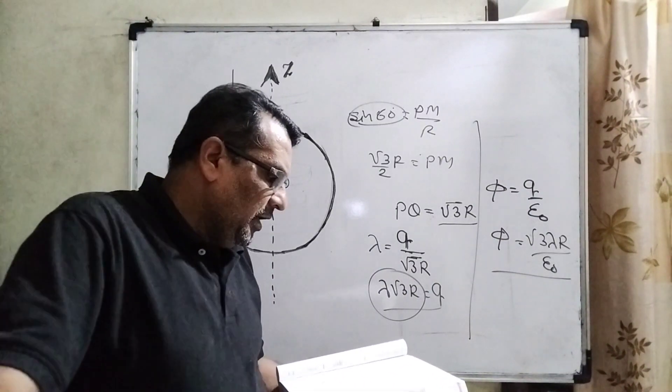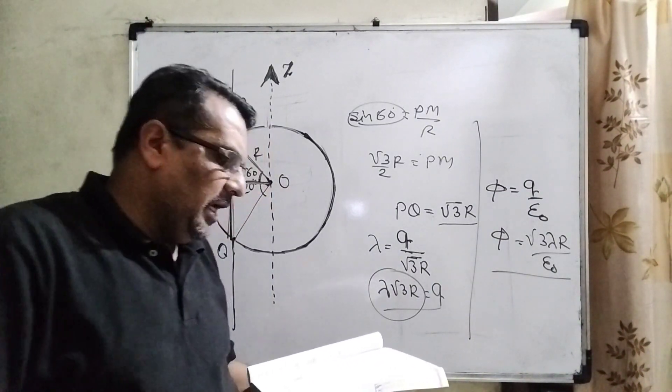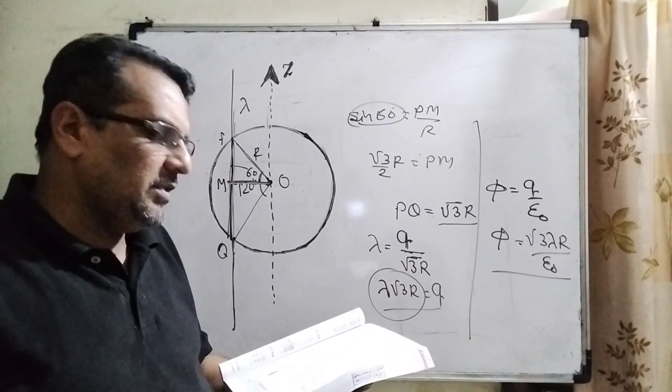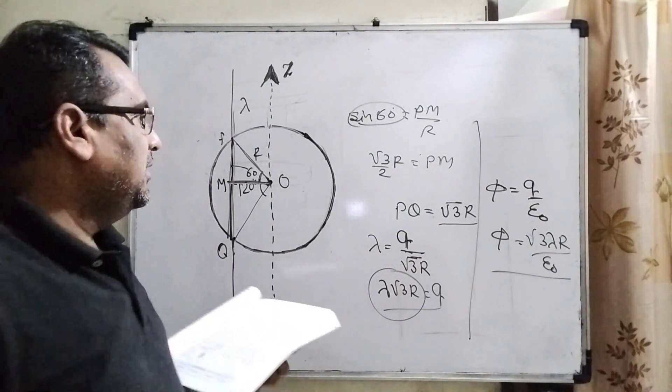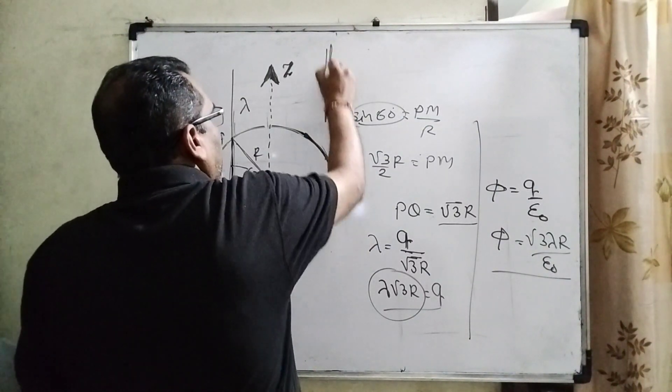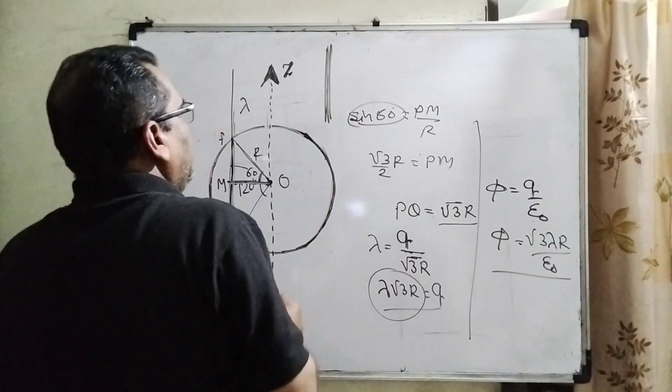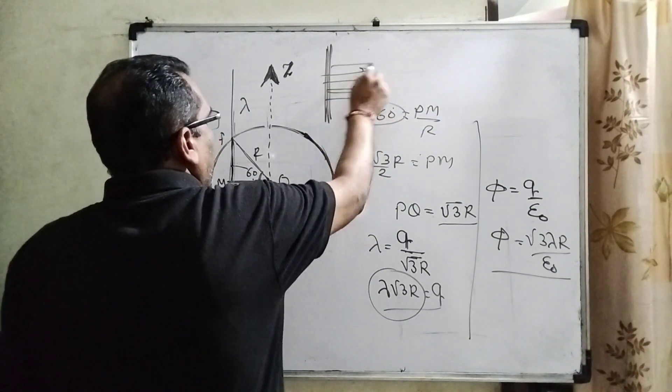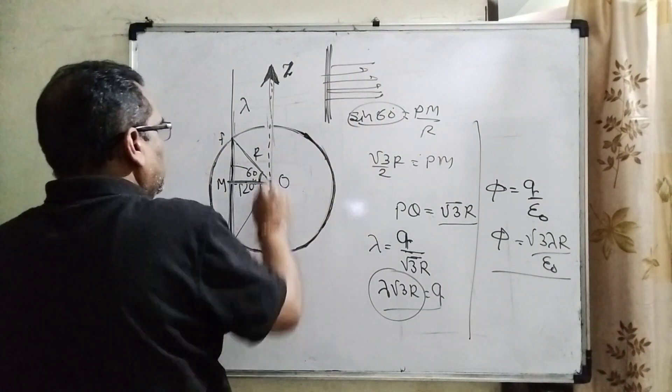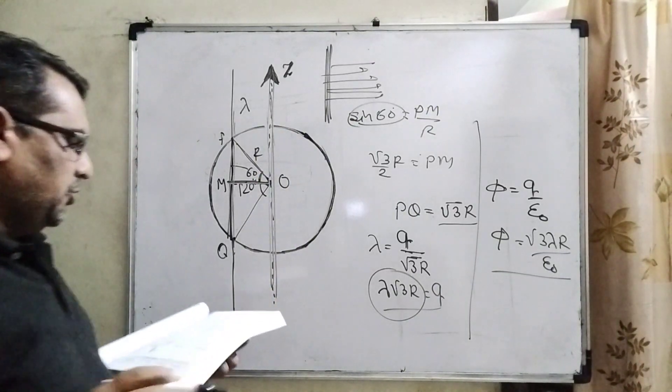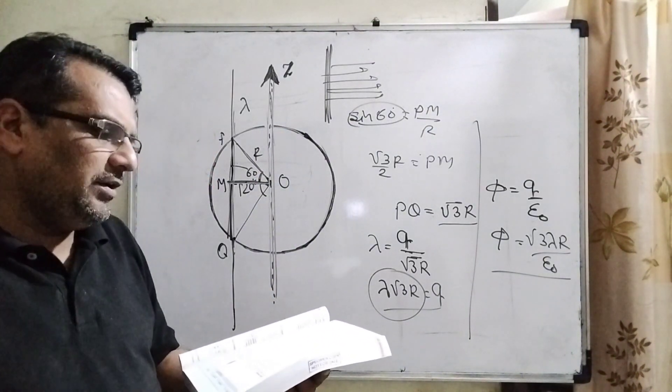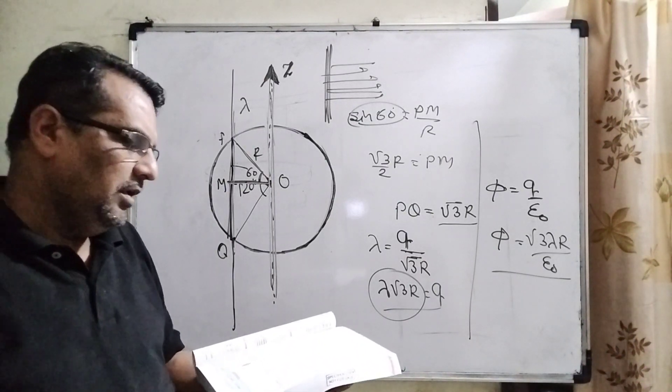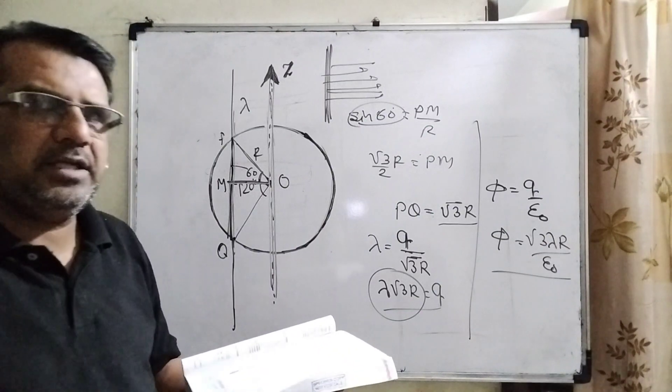Now option second: the z-component of the electric field is zero at all points on the surface of the shell. Yes, you know that very well. Whenever we have to calculate the electric field for anybody, maximum electric field is perpendicular, not along the length. So therefore here the z-component of the electric field is zero at all points on the surface of the shell. So first option and second option are correct.